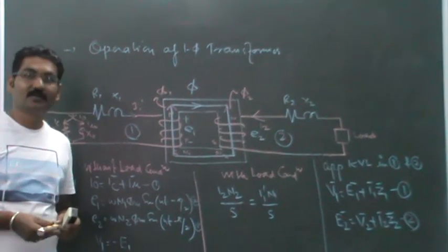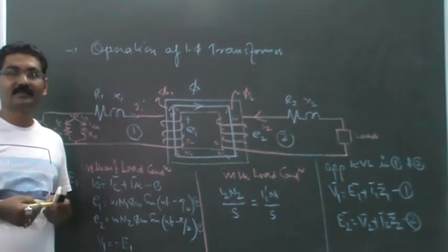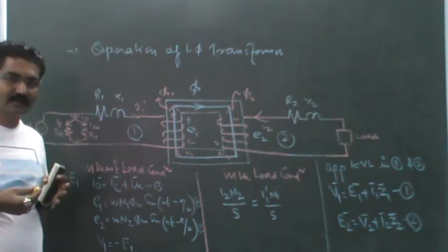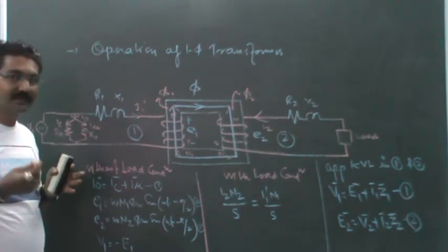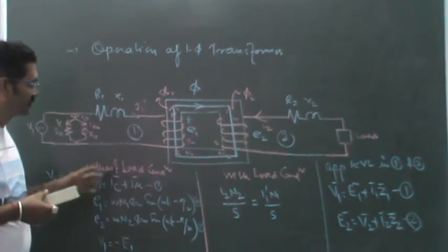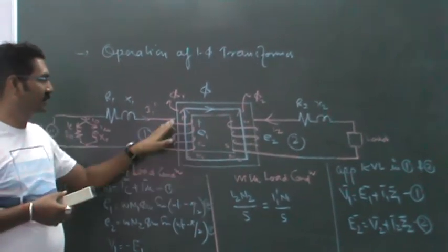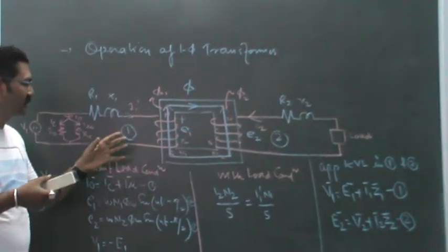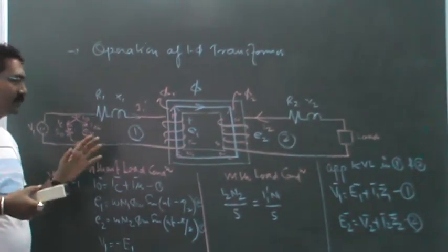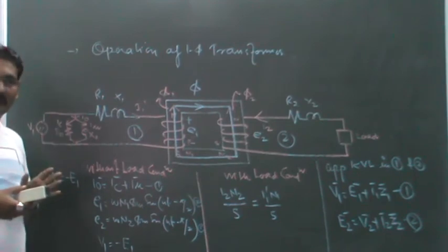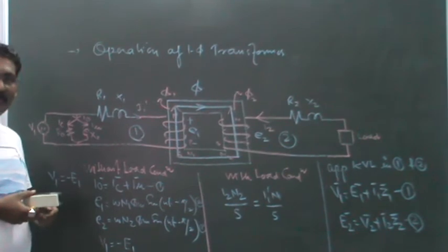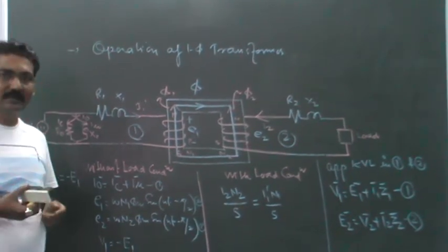In the previous lecture, we understood how a transformer operates with two main parts: core and windings. When the primary is supplied with AC voltage, a flux is established in the core which varies alternately at the frequency of the supply voltage.